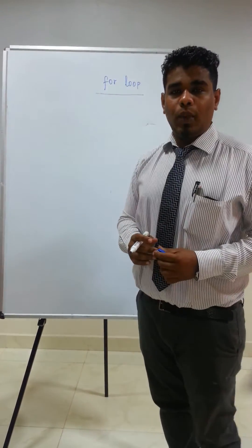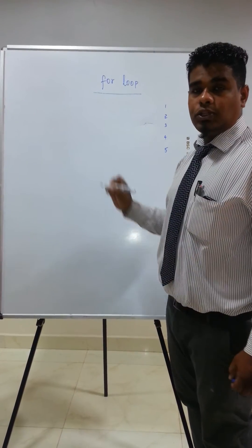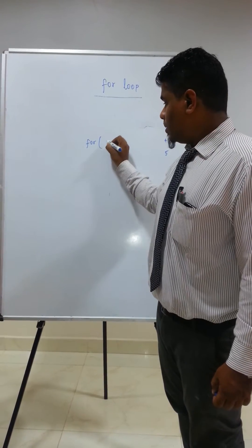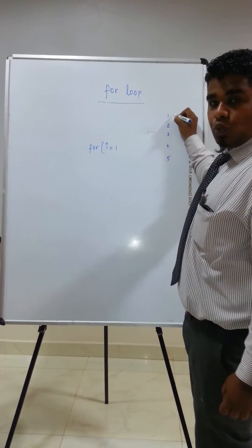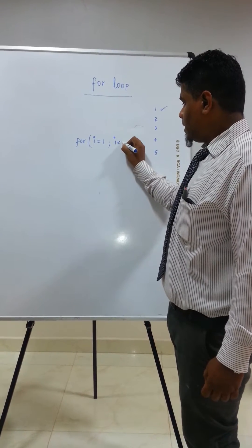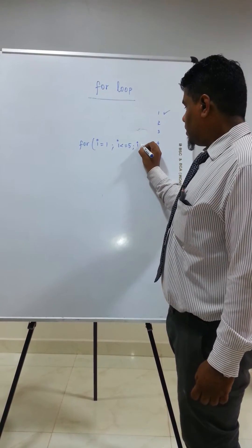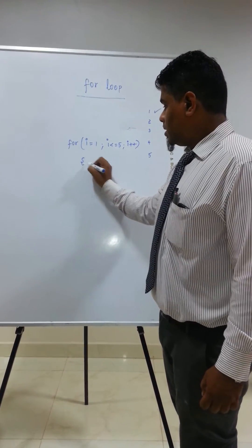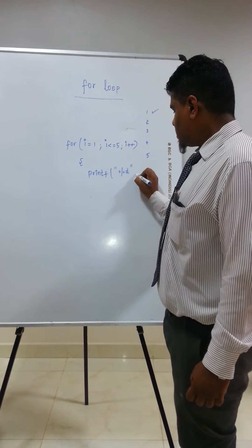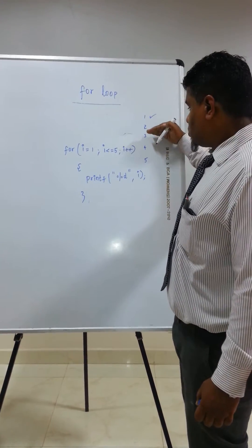If I want to print the values starting from 1 to 5, I should write my for loop as: for, I need to assign values to the variable. I am using the variable i. The starting value is 1, so i = 1. The ending value is 5, so I need to write the condition as i <= 5. The value is incrementing one by one, so I need to use the increment operator i++. I am printing the value of i using printf with format specifier %d, i. This is the logic for printing the numbers 1, 2, 3, 4, 5.